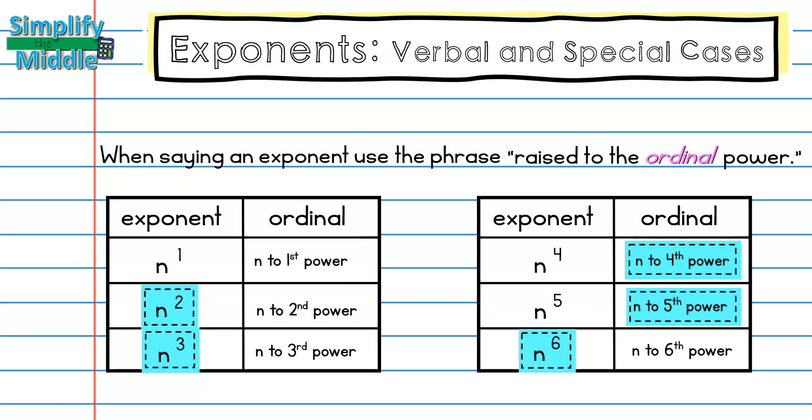Now, there are a couple of special cases. We always say exponents as raised to the ordinal power, but for this exponent right here, we can say that this is n squared. This should sound familiar, or squared, because we use it all the time when we talk about area.